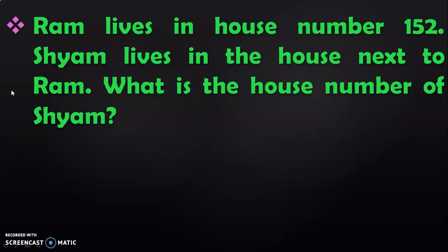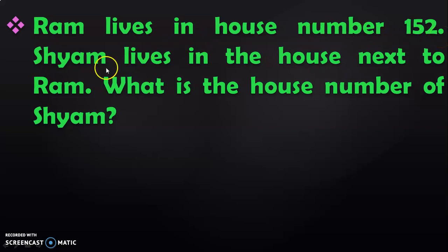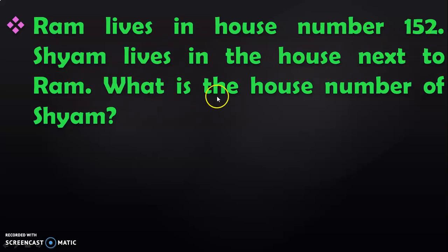Take a simple example like this. Ram lives in house number 152. Shiam lives in the house next to Ram. What is the house number of Shiam?